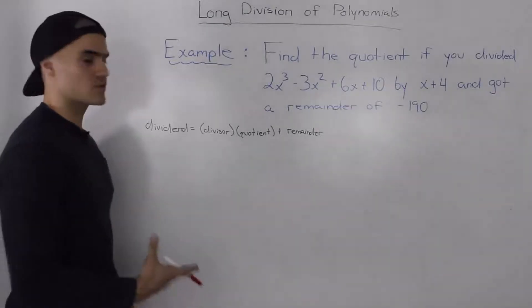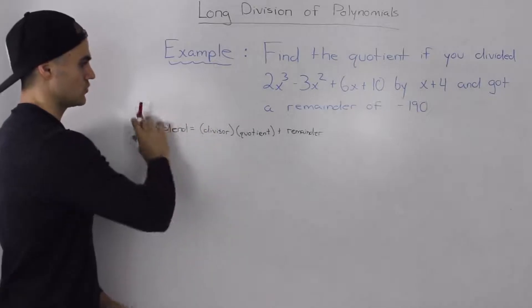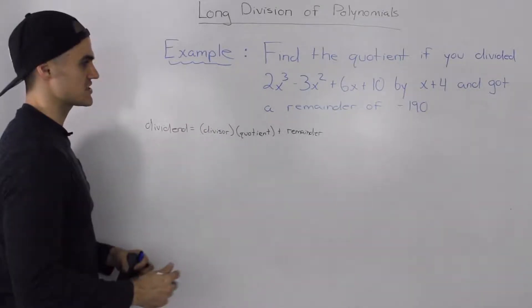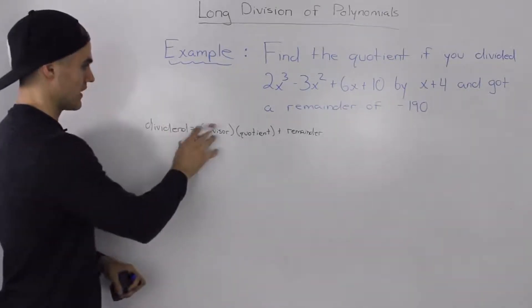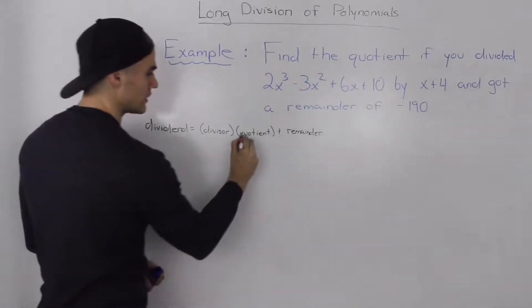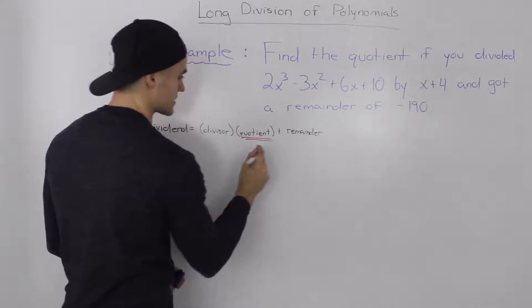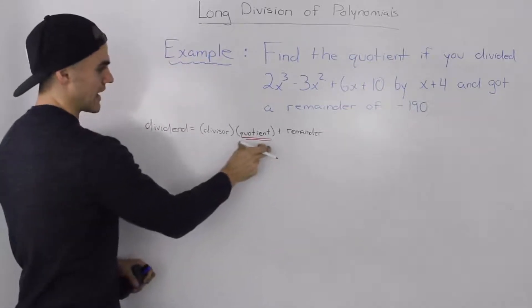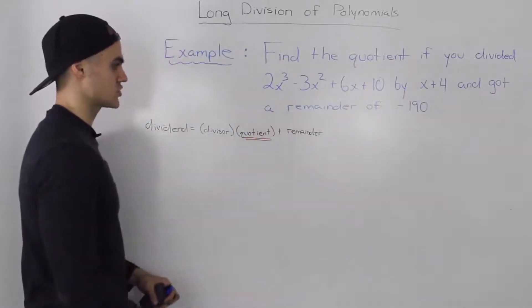The first thing you always want to do when you get a question like that is write out the division statement and then find out what you're trying to isolate for. We're trying to find the quotient in this case so we're going to have to isolate it in this expression.